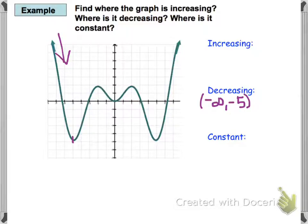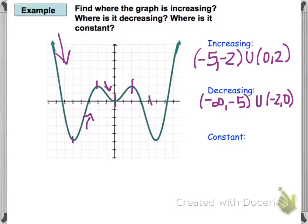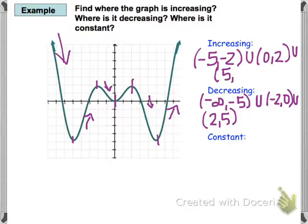Now it's increasing, going uphill all the way until x equals negative 2, so from negative 5 to negative 2 we're increasing. We're decreasing again until 0, so we use the union symbol U — meaning 'and the next part' — decreasing from negative 2 to 0. Then increasing from 0 to 2, decreasing from 2 to 5, and increasing again from 5 to infinity. We're only using x values and only parentheses.